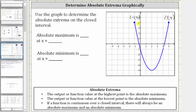Notice how both have the same y value or function value. Four is the absolute maximum, but it happens to occur at two locations — at x equals negative one as well as x equals five. So we say the absolute maximum is four at x equals negative one and x equals five.